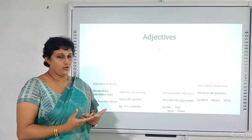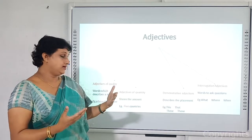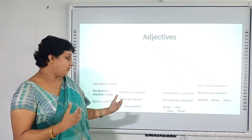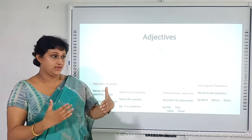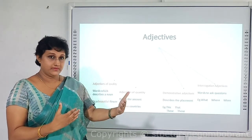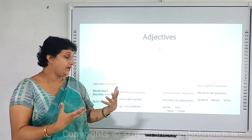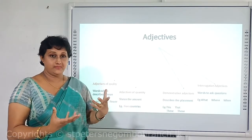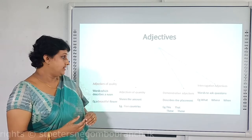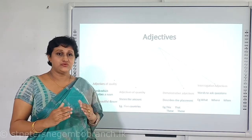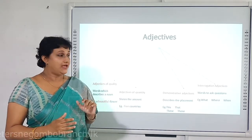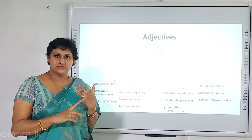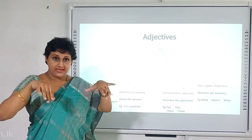The second type is adjectives of quantity — you tell the amount. For example, 'five countries' or 'five pencils' — the number five tells the quantity. The third type is demonstrative adjectives. There are four: this, that, these, and those. You use them to tell the placement of a certain object.